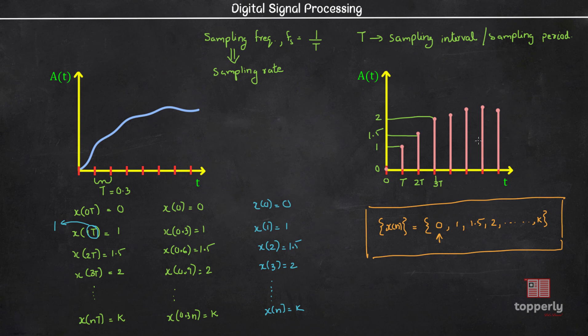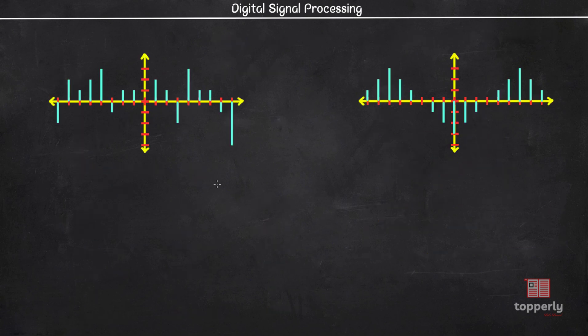To solidify this concept, let's do two examples. We are given with two discrete signals and we have to represent them as sequences. Also, I am assuming that each of these divisions on the y-axis corresponds to one unit.